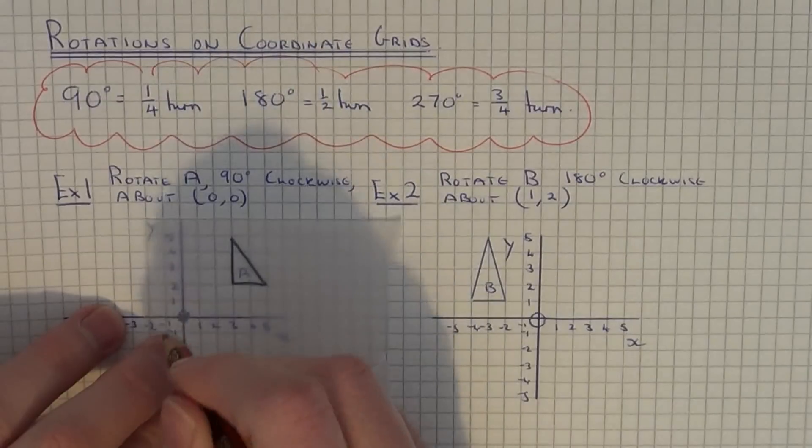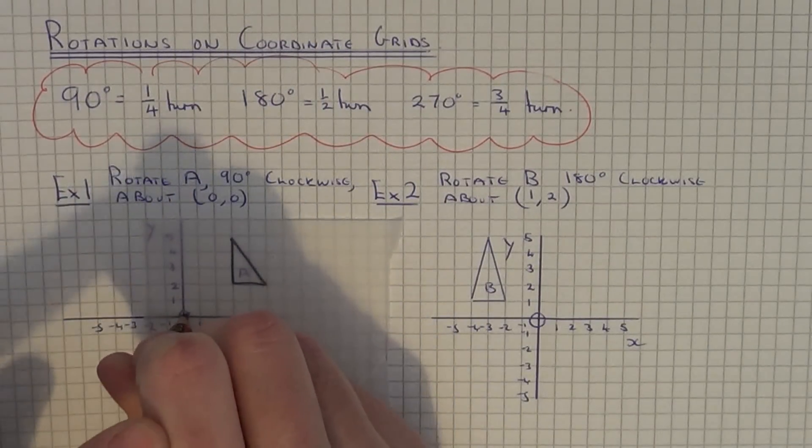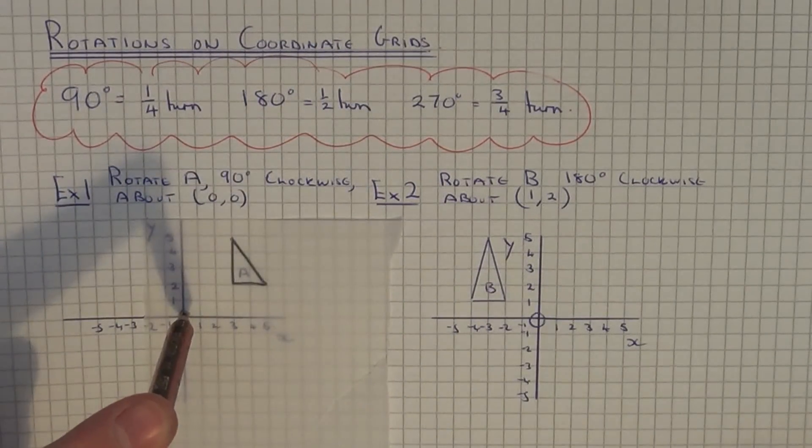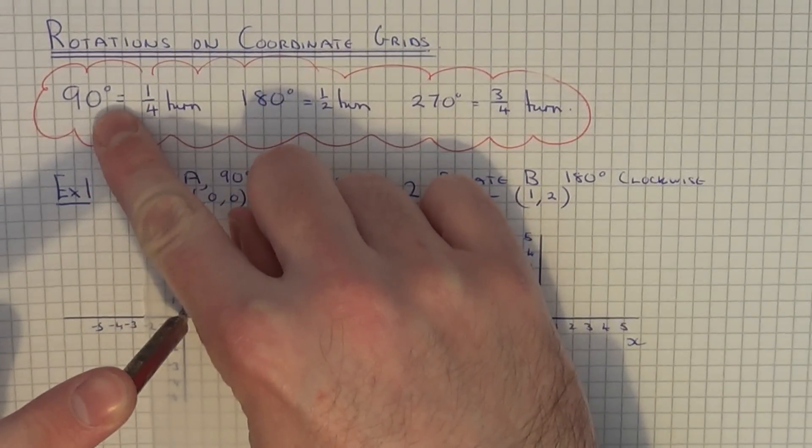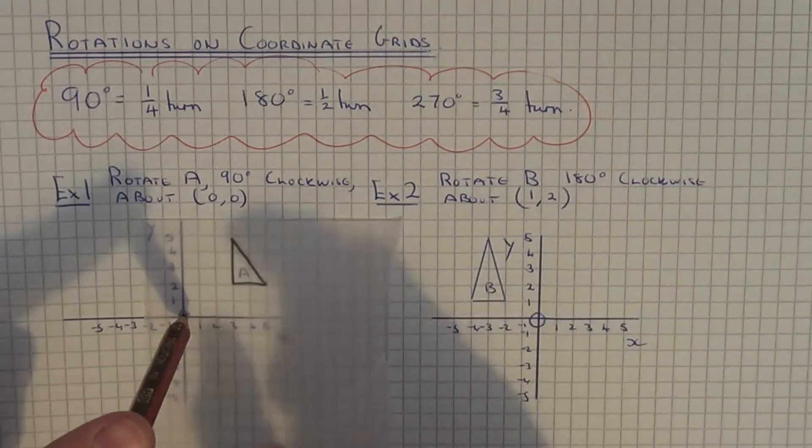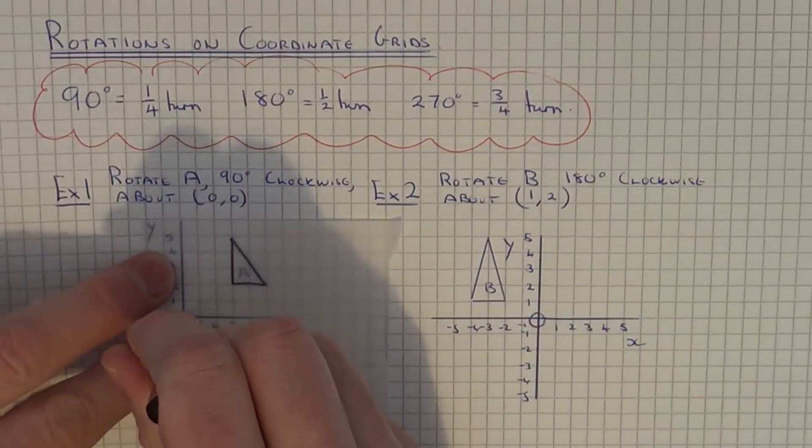The next thing you need to do is put your pencil onto the centre of rotation. We've got to rotate it 90 degrees clockwise. A 90 degree turn is a quarter turn, so our tracing paper needs to be turned around a quarter.